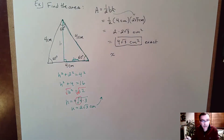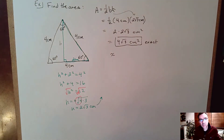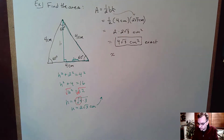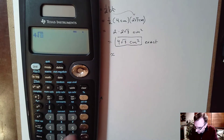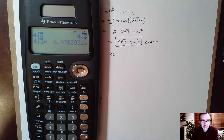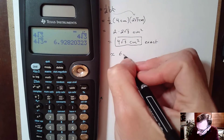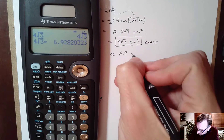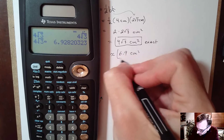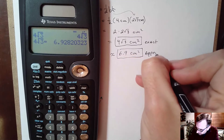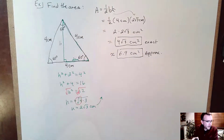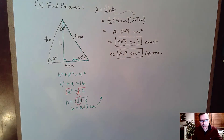We can do that on a calculator if we want the approximate answer. I'll type in 4 square root of 3 and hit the approximate button, and I get about 6.9 centimeters squared. That's the approximate answer — and there you have it, the area of an equilateral triangle.